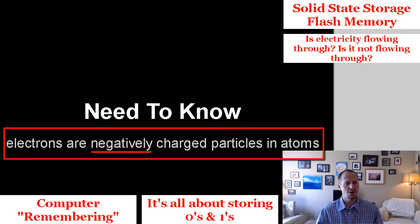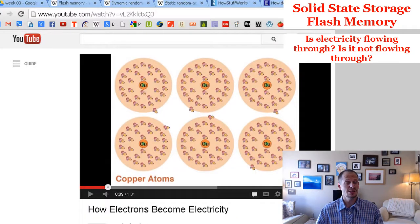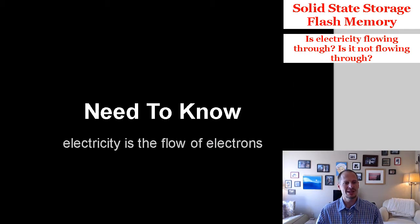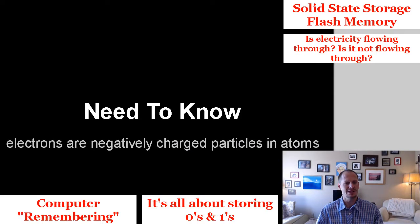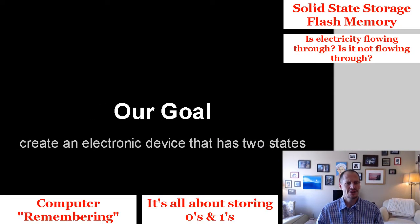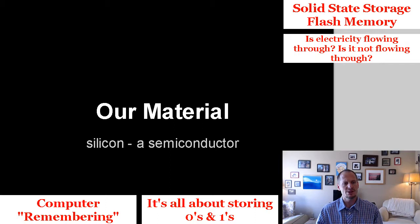I watched a video called 'How Electrons Become Electricity' — it was geared toward about fourth graders and only a minute and a half long, but it reaffirmed what I was learning. Check it out if you want to know more. The key takeaway: electricity is the flow of electrons, and electrons are negatively charged particles in atoms. Our goal is to create an electronic device that either lets electricity through or stops it, using a semiconductor material called silicon.